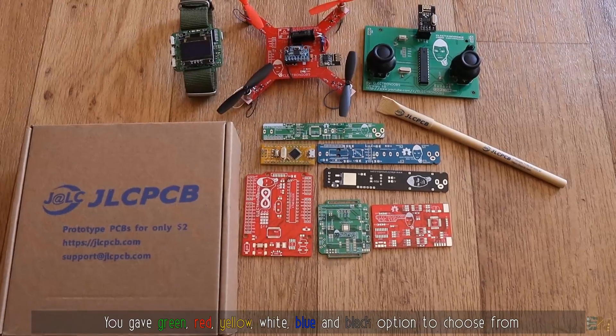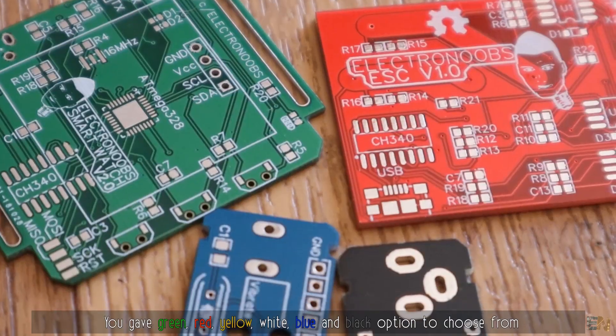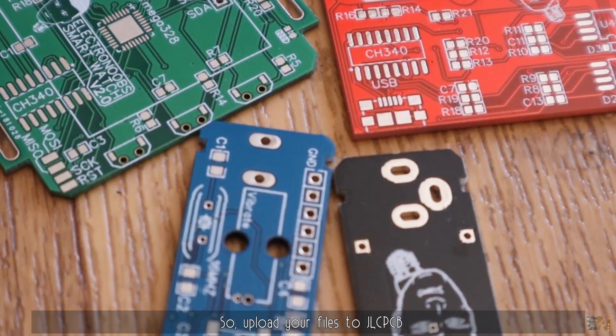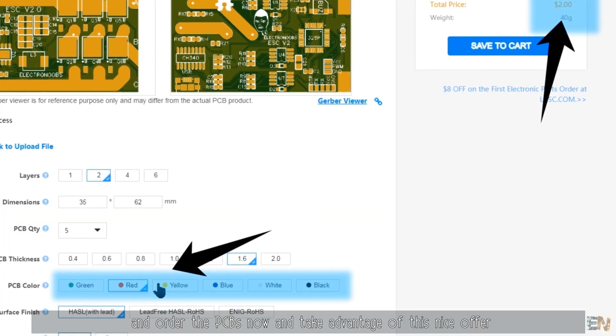For just 2 dollars you can get 10 PCBs of 10x10 centimeters of any color now. You have green, red, yellow, white, blue and black options to choose from. Upload your files to JLCPCB and order the PCBs now and take advantage of this offer.